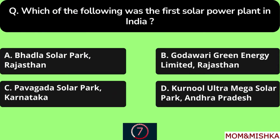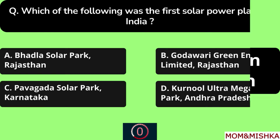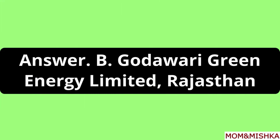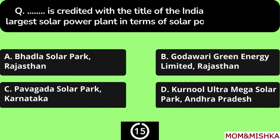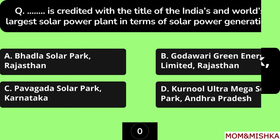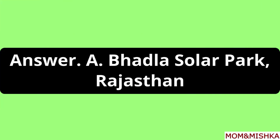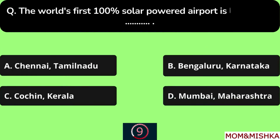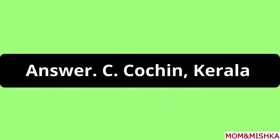Which of the following was the first solar power plant in India? Godavari Green Energy Limited of Rajasthan, Option A. The first 100% solar powered airport is located in Cochin, Kerala, Option C.